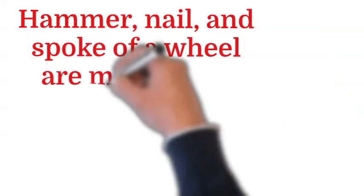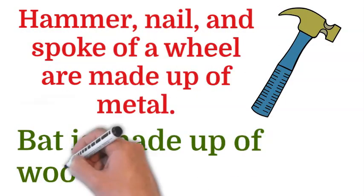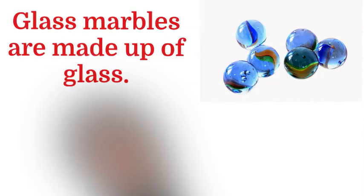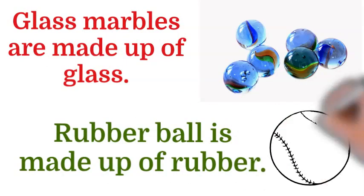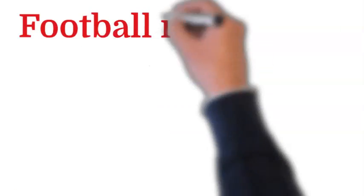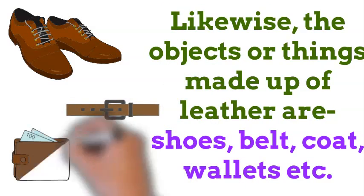Hammer, nail, and spoke of a wheel are made up of metal. Bat is made up of wood. Glass marbles are made up of glass. Rubber ball is made up of rubber. Football is made up of rubber, leather, and plastic. Likewise, objects made up of leather are shoes, belt, coat, wallets, etc.